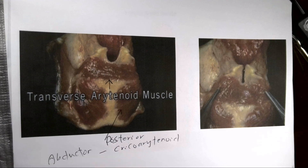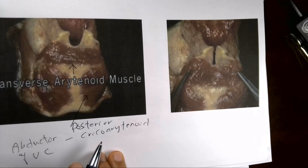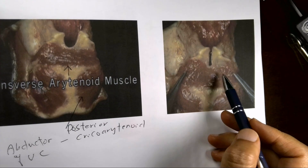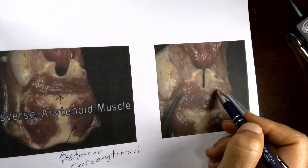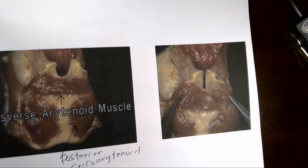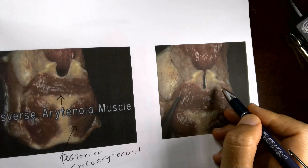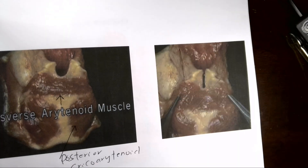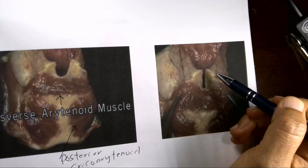Here again is the transverse and the posterior cricoarytenoid. Covering this muscle from the back is the oblique arytenoid, which extends up to the glottis. Contraction of an abductor shuts down the laryngeal cavity.